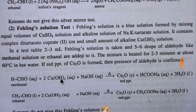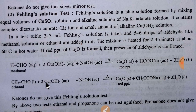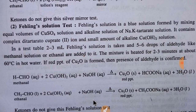Methanal in the presence of Fehling's solution gives copper oxide precipitate and sodium methanoate. In the case of ethanal, it produces sodium ethanoate and a copper oxide precipitate. Ketones do not give this Fehling's solution test, so by this test you can differentiate between aldehyde and ketone. Please pause this video and read the text, and check the description box to learn more about Fehling's solution. Thank you for viewing.